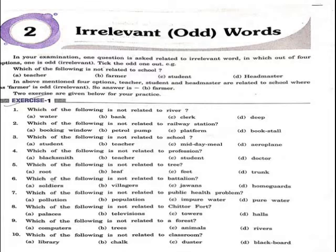Which of the following is not related to school? Options are student, teacher, midday meal, aeroplane. The right answer will be D — aeroplane.